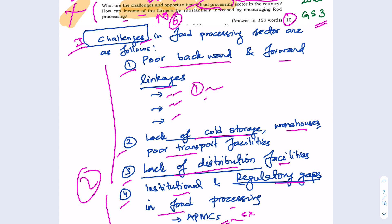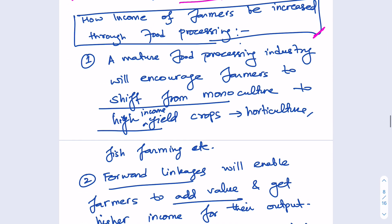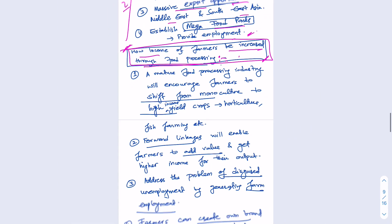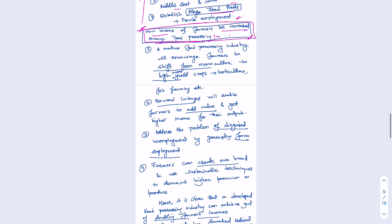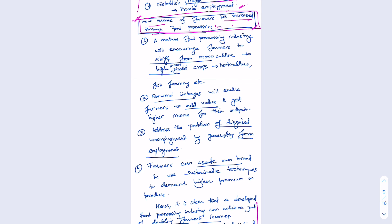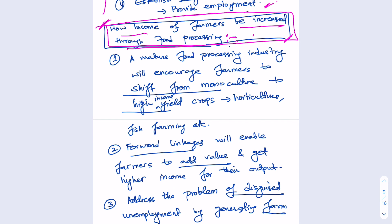For opportunities, I have listed four: India is a nascent market with potential to add significant value to GDP through food processing; potential to double farmers' income; massive export opportunities to the Middle East and South East Asia; and establishing mega food parks to provide employment. Four solid points here should earn you marks. Then we come to the main question — how can income of farmers be increased by encouraging food processing?